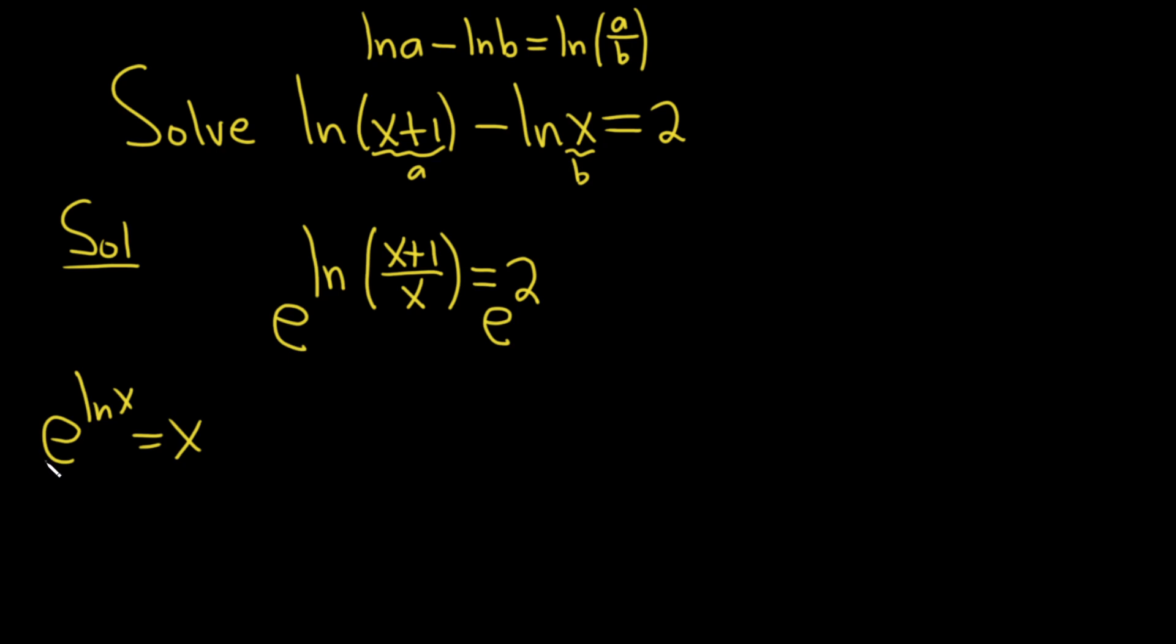Then just like they go away in the formula, they go away here. So we have x plus 1 over x equals e squared.